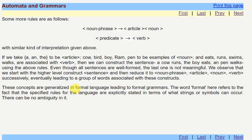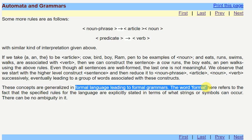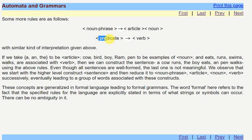These concepts are generalized in formal language, leading to formal grammars. The word formal here refers to the fact that specified rules of language are explicitly stated in terms of what strings or symbols can occur. There is no ambiguity in it. We have some set of production rules. These are a type of production rules from which if we are giving this as an input, then we can derive this from that.